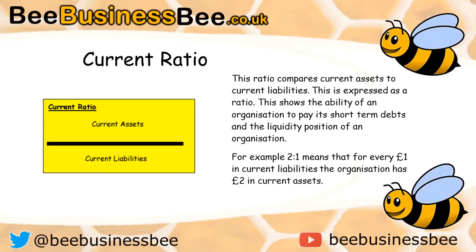When you perform the division you express the result as a ratio — for example, 2:1. In plain terms, that means for every one pound in current liabilities, the organization has two pounds in current assets. That means the business can pay its current liabilities and still has one pound left over for every pound owed, so if the business were shut down tomorrow, after paying all debts there would still be surplus.